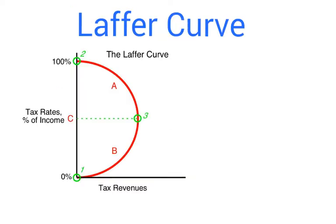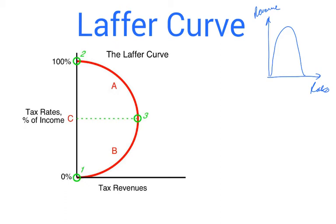The Laffer Curve can be drawn in a couple of ways. The AQA textbook and mark schemes generally draw it with revenues on the horizontal and rates on the vertical axis, though you may also encounter it the other way around — with revenue on the vertical and rates on the horizontal. Either way, it demonstrates the same thing. The AQA board generally prefers the version where the bulge is horizontal. We have three points labelled one, two, and three.